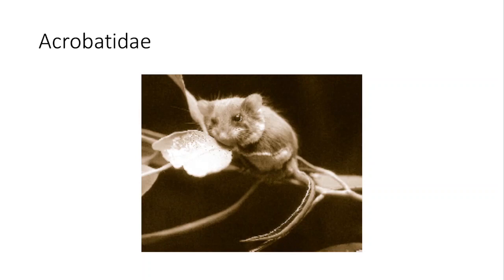Probably my favorite marsupial of all is the feathertail glider — this little 12-gram glider called that because it has a tail shaped like a feather. They are just absolutely amazing animals that live in Australia. Within the same family, there is another genus that does not glide, which is also a kind of interesting animal — that one shows up in New Guinea.